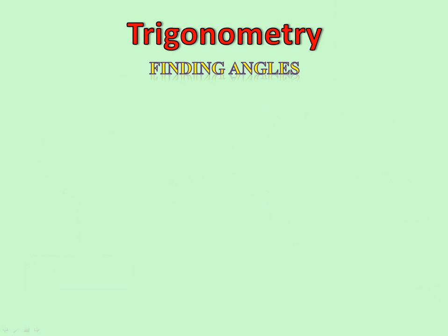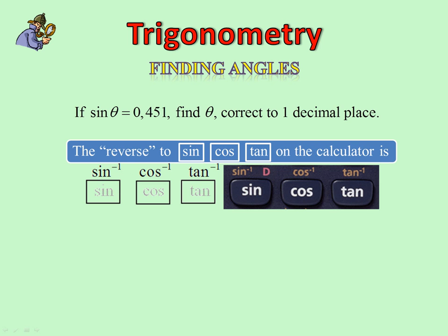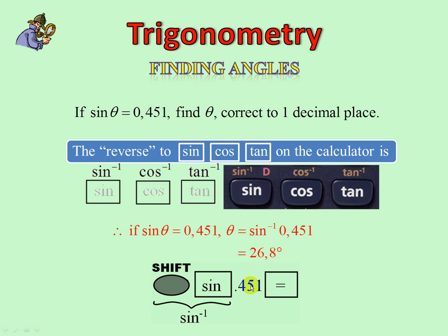Finding angles. If sine theta equals 0.451, find theta correct to one decimal place. To reverse is where it has those sine minus 1s, cos minus 1, and tan minus 1 above. So this is where we're going to use the shift key. There we are, the shift key up above. If sine theta equals 0.451, then theta is sine to the minus 1 of 0.451. So we're going to press shift, sine, 0.451 equals, and we get our answer, 26.8 degrees. Here we are, shift, sine, which is sine minus 1, 0.451 equals.